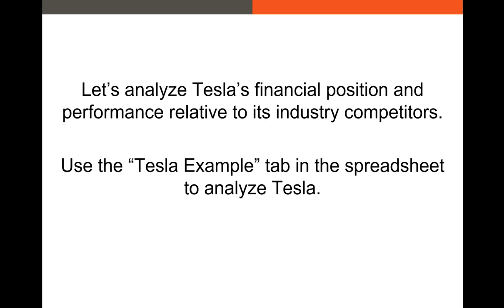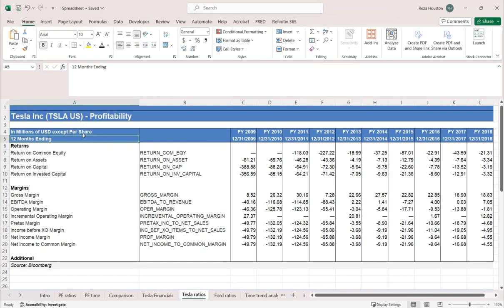One additional example: let's take a look at Tesla's financial position and its performance relative to its direct competitors. We'll compare Tesla over the last couple of years to Ford over the last couple of years, so we're basically going to use both time trend and peer group analysis. I pulled some data from Bloomberg on both Tesla and Ford.